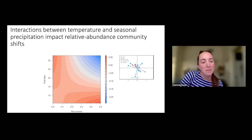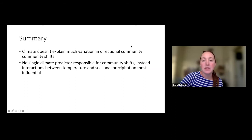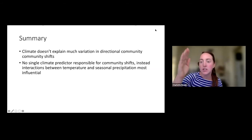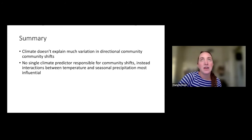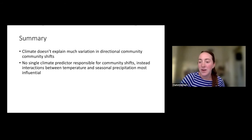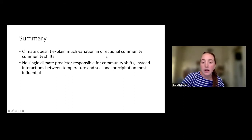To summarize this first part: climate doesn't explain much of the variation we see in community shifts — only 8 to 16% — meaning 80 to 90% of the variation is unaccounted for. There's no single important climate factor for community shifts; it's the interactions between them that are very important.